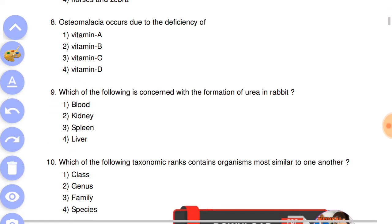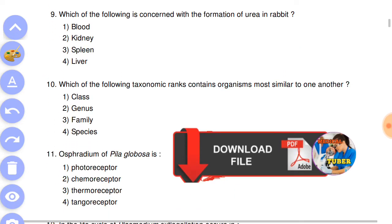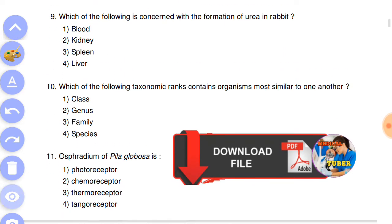Question number eight: osteomalacia occurs due to the deficiency of answer number four, vitamin D. Next question: which of the following is concerned with the formation of urea in rabbits? Answer is the fourth, liver.